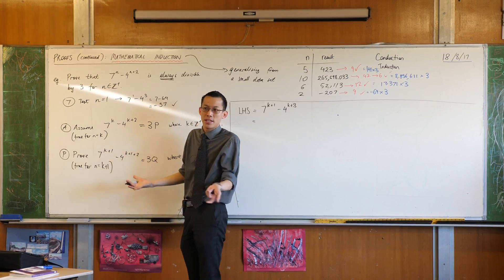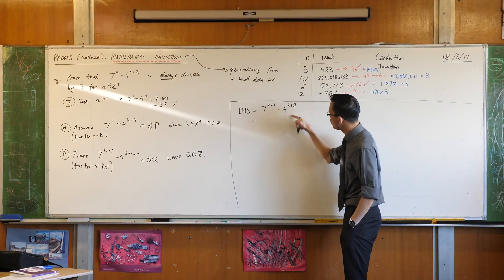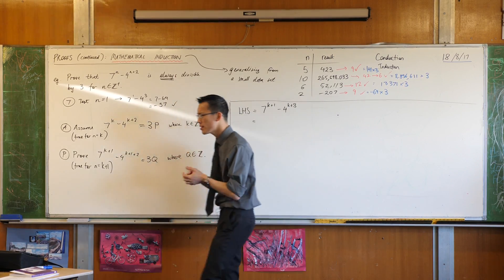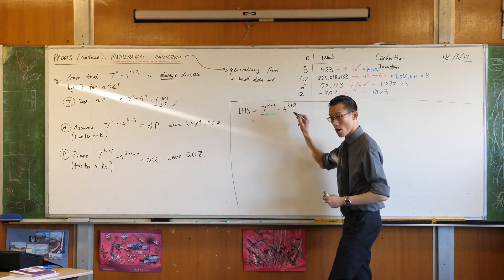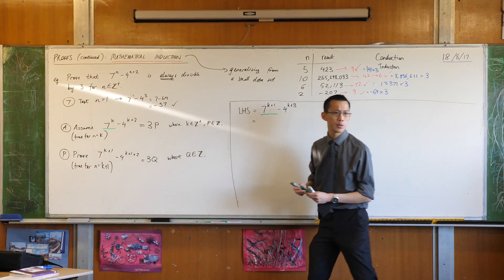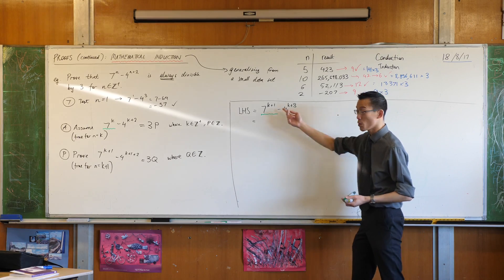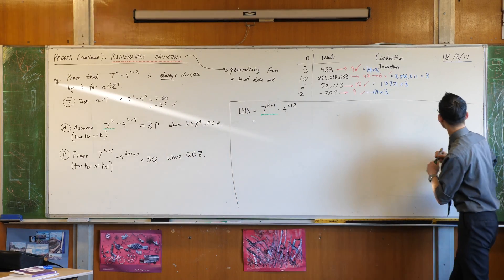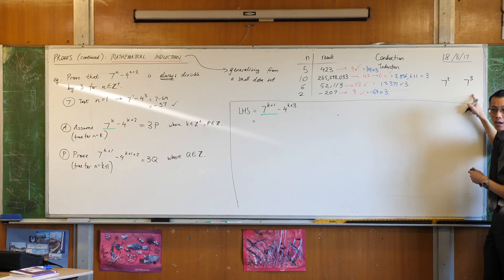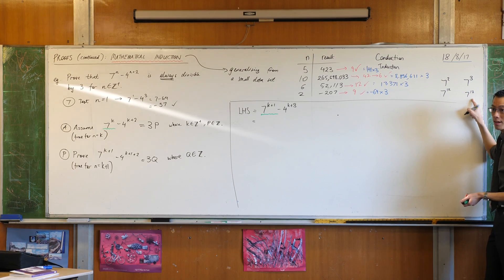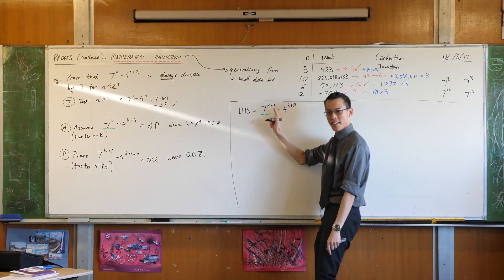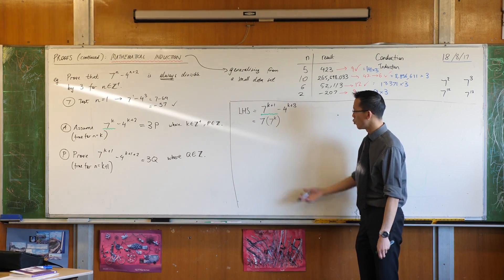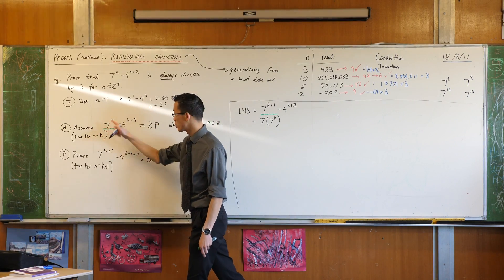I don't actually know it's true but I'm just seeing what happens if it is. So in order to use that fact I need to manipulate this so it looks more like this. Look at the first term: 7 to the k plus 1. What's the difference between 7 to the k plus 1 and 7 to the k? It's just the plus 1 in the index, which means it's multiplied by 7. The difference between 7 squared and 7 cubed is that this is 7 times bigger. So I can rewrite this as 7 times 7 to the k, which looks a little more like what I need.